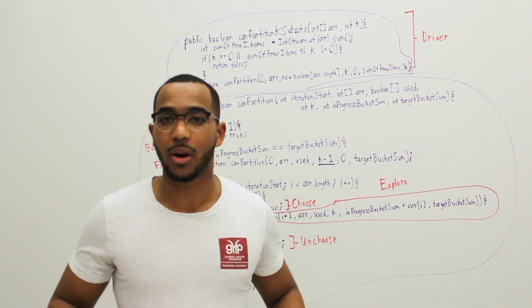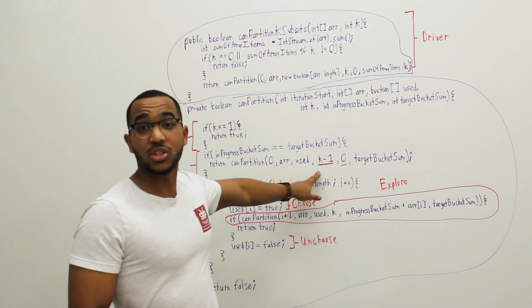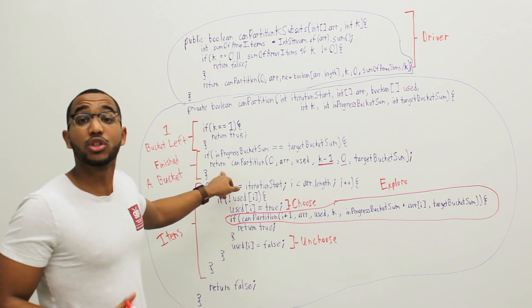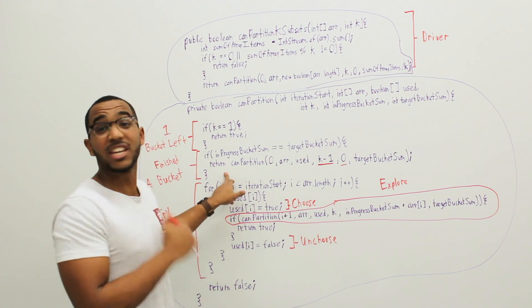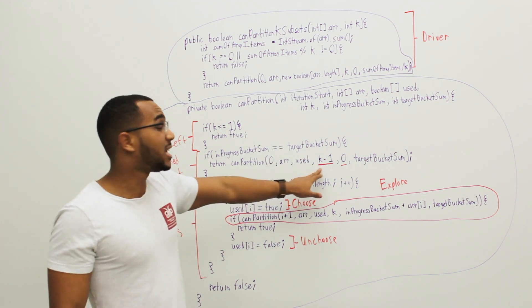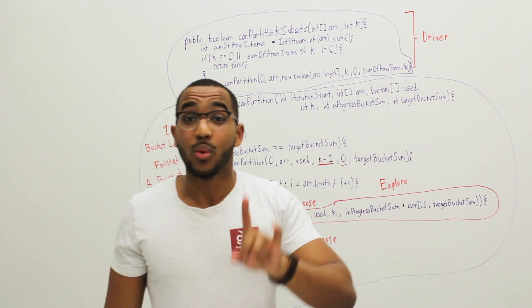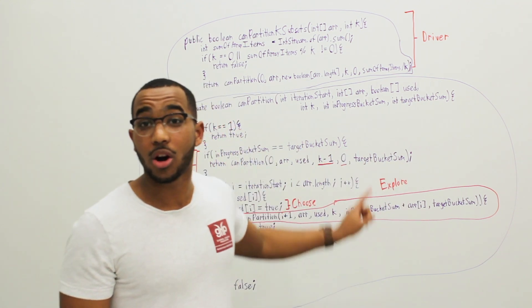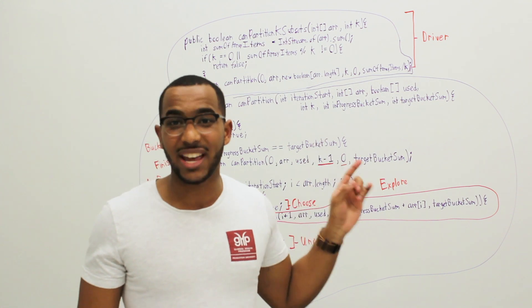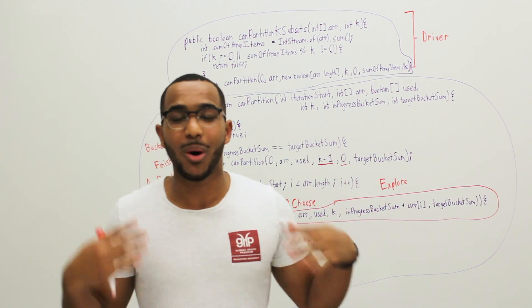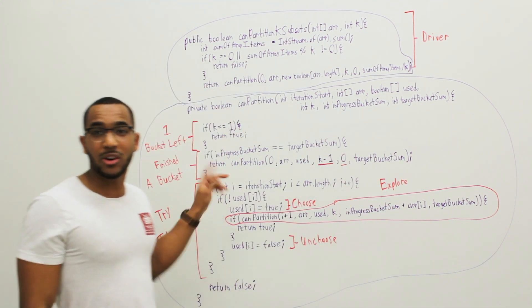This is all that changes. We continue our recursion. We return the result of the partitioning continued from here and we now work on the next bucket. And keep in mind, we still have track of the items we've already used. Our seen array, our boolean array is still in memory holding what we've already used. Then we go into our iteration, our choices that we make.